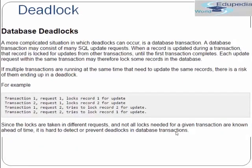If we have more than two threads, deadlock could be more complicated and difficult to detect and resolve. Another case is database deadlock, a more complicated situation. A database transaction may consist of SQL update requests; when a record is updated during the transaction, that record is locked for updates from other transactions until the first transaction completes. Each update request within the same transaction may therefore lock some records in the database.